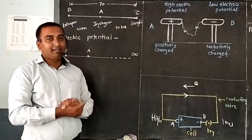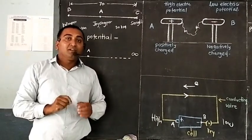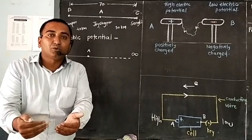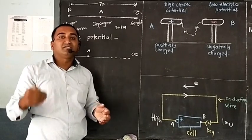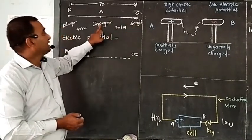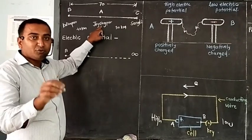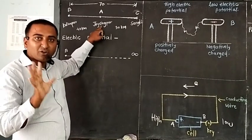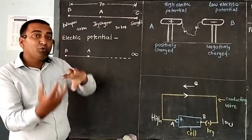One vehicle is in Sangli. That vehicle we have to bring to Kolhapur or Jaisingpur. Suppose that vehicle's average is 10 km per litre. If you give 1 litre petrol to that vehicle, then that vehicle will do the work of 10 km. If you want to bring that vehicle from Sangli to Jaisingpur, then we have to fill 3 litres of petrol. So, if you are consuming petrol, that means you are consuming energy and doing work. To bring something from one point to another point, you have to do work.